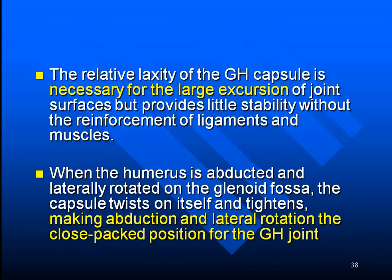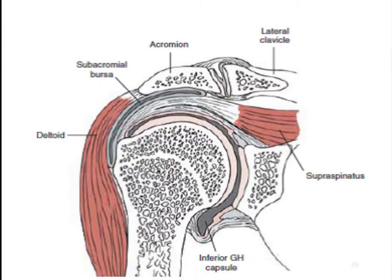Students should remember that the close-packed position of the glenohumeral joint is abduction and slight lateral rotation — not too much lateral rotation is required; simply abduction and some degrees of lateral rotation. The glenohumeral joint capsule is very taut superiorly compared to inferiorly and anteriorly, where it is much more slack. The supraspinatus tendon is a member of the rotator cuff, and along with the other muscles and capsular ligaments, provides static and dynamic stability to the glenohumeral joint.